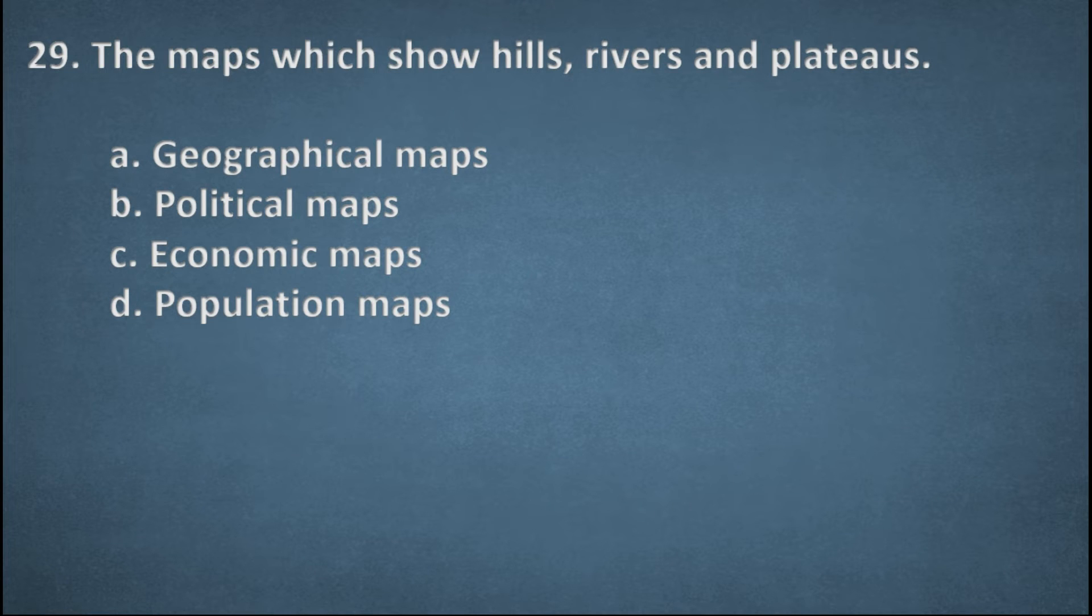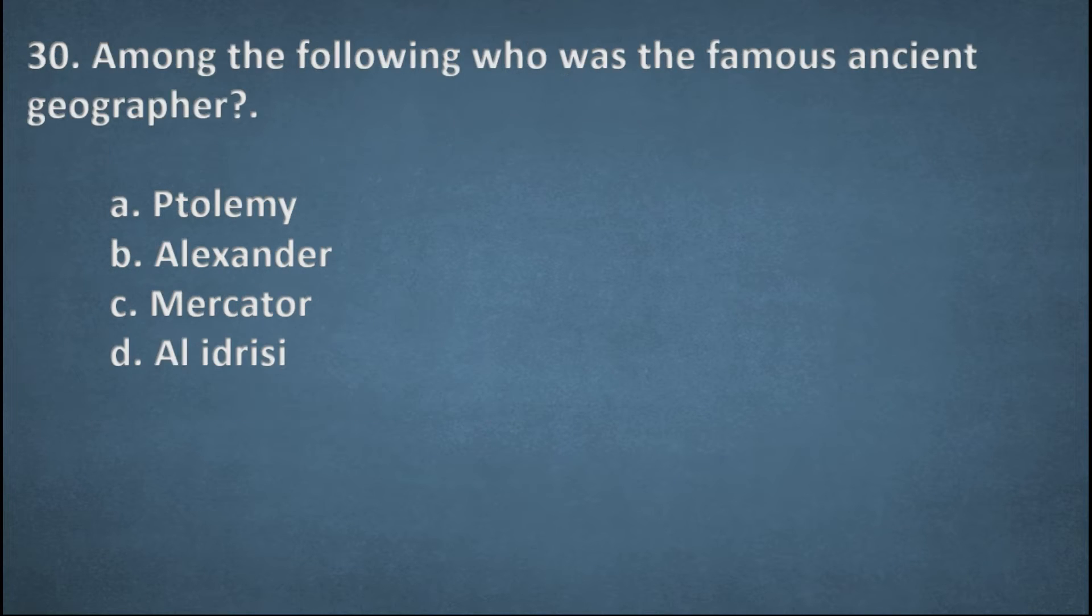Next one. The maps which show hills, rivers and patches. Options: Geographical maps, Political maps, Economic maps, Population maps. The right option, Geographical maps. Next one. Among the following who was the famous ancient geographer? Options: Ptolemy, Alexander, Marketer, Hull Dirisi. The right answer is A, Ptolemy.